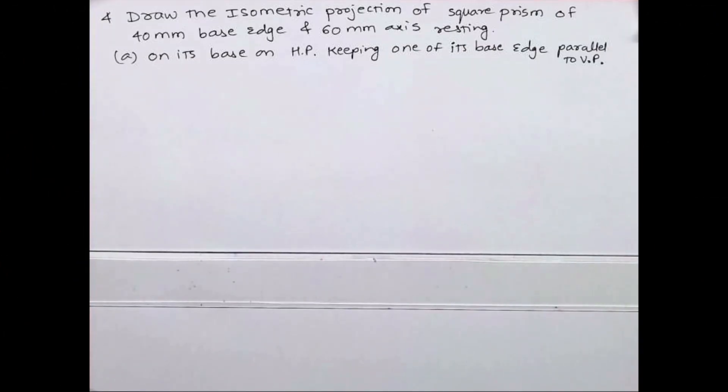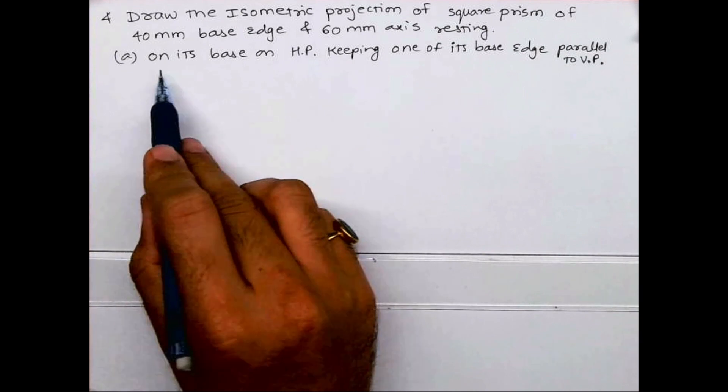Welcome to technical drawing. Today we'll see how to draw the isometric projection of a square prism of 40mm base edge and 60mm axis, resting on its base on HP, keeping one of its base edges parallel to VP.